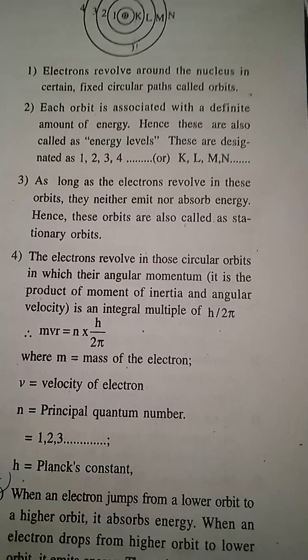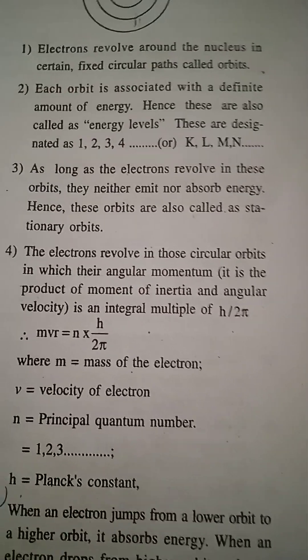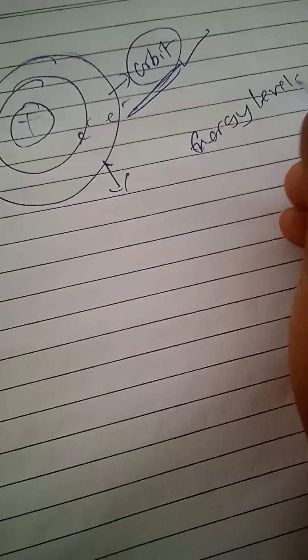Each orbit is associated with a definite amount of energy. So each orbit has a certain amount of energy associated with it. Each one is called an energy level.